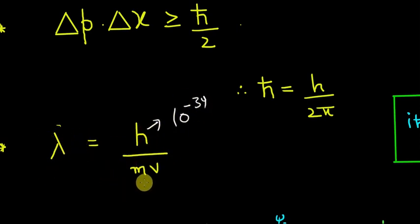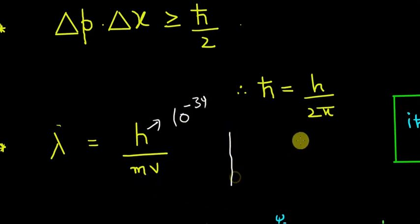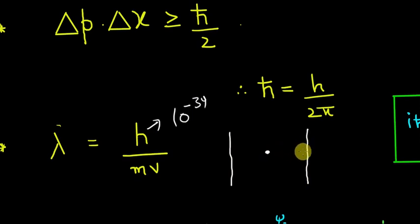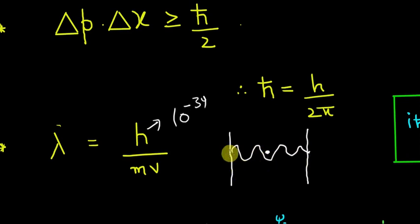But when we go smaller and smaller and reach the quantum realm, the de Broglie wavelength of an electron or a particle becomes comparable to the dimensions we are dealing with. Then the particle starts acting like a wave and we have to apply the Schrödinger wave equation, which is like the Newton's law of quantum mechanics.